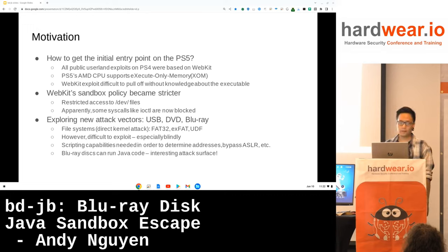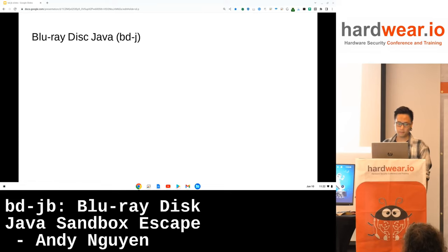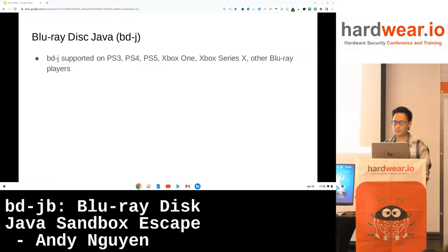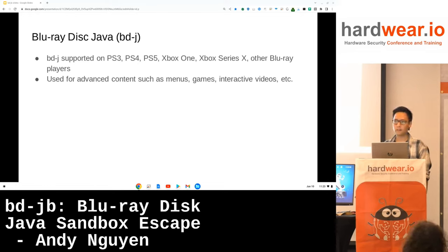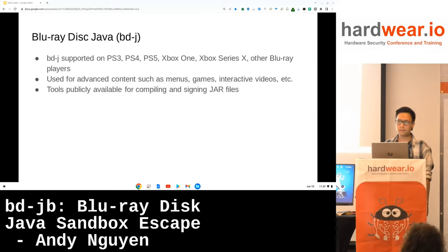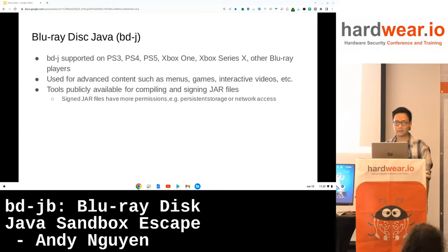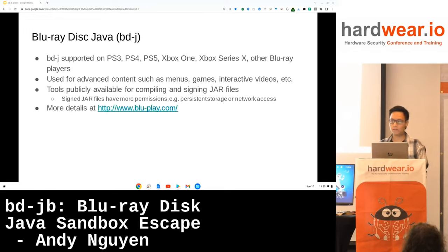It turns out that Blu-ray discs can run Java code, which is a very interesting attack surface. What is Blu-ray Disc Java, or BDJ? It is supported on the PS3 to PS5, on the Xbox One, Xbox Series X, and other Blu-ray players. It is used for advanced content such as games, menus, and interactive videos. There are tools publicly available for compiling and signing JAR files, where signed JAR files simply have a bit more permissions and can access persistent storage or the network. More details can be found at blueplay.com.